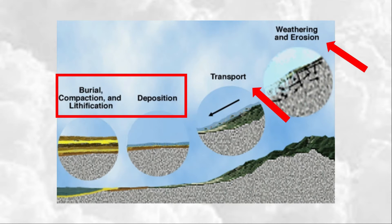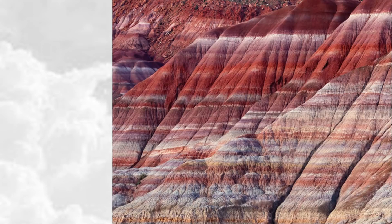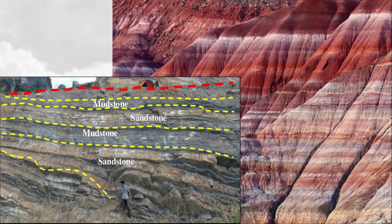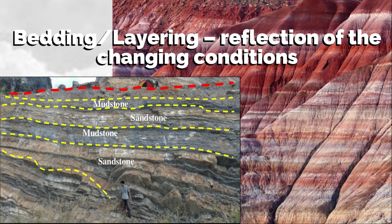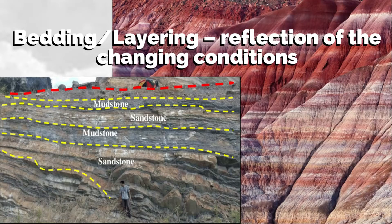Not only do sediments form layers, they also tend to cover an extensive area. If conditions on the surface do not change — meaning there are constant rates of weathering, erosion, or deposition — only thick, homogeneous, and undifferentiated sedimentary rocks will form. Bedding or layering in sedimentary rocks is a reflection of the changing conditions during deposition. Each layer represents an interval of time where conditions have remained uniform — meaning if conditions stayed the same, no new layer is formed.